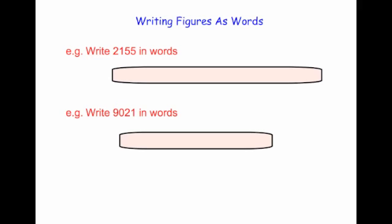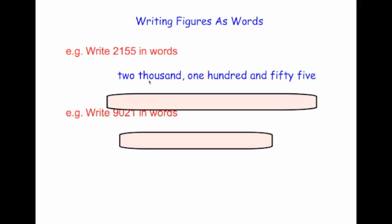One of the most important things whenever you're writing figures as words is to write it exactly how you would say it. So this is 2,155. You would say it as two thousand, one hundred and fifty-five. So you'd write two thousand, one hundred and fifty-five.